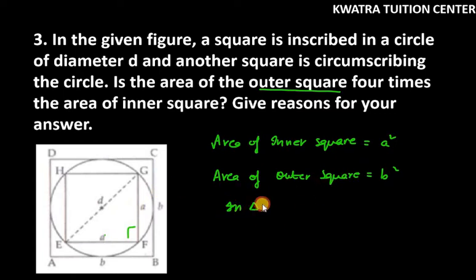Let's find this. We will be using Pythagoras theorem in EFGH. We know that hypotenuse is d² and base is a². This is a and perpendicular is a as well. On the right-hand side, we have 2a² and on the left-hand side, we have d².